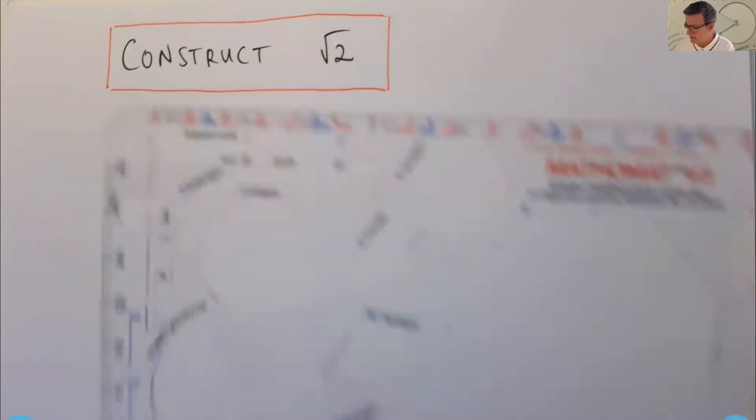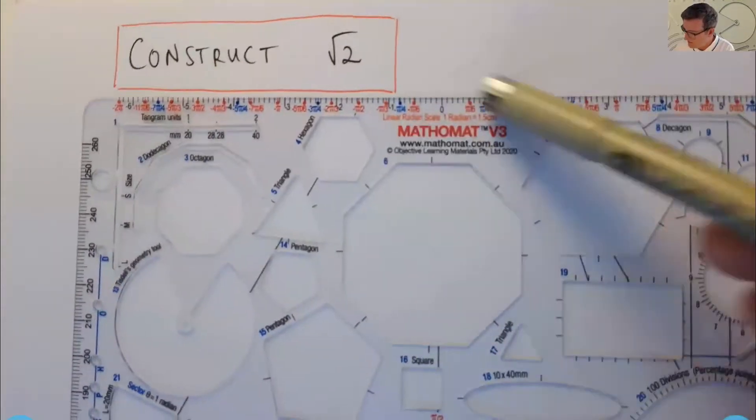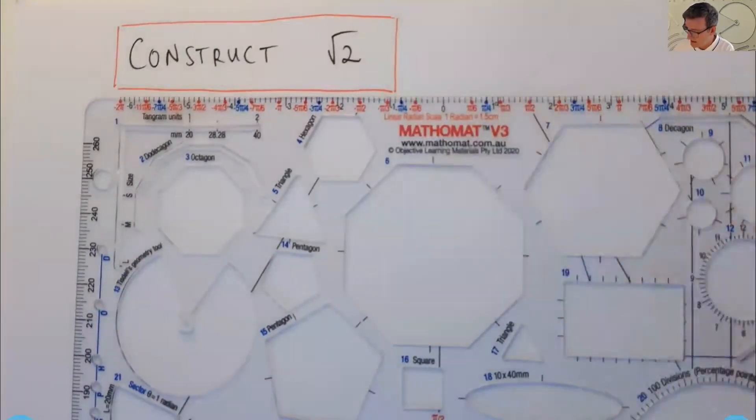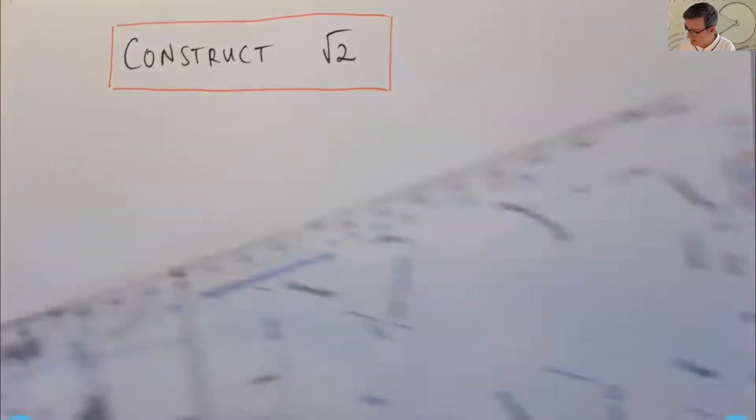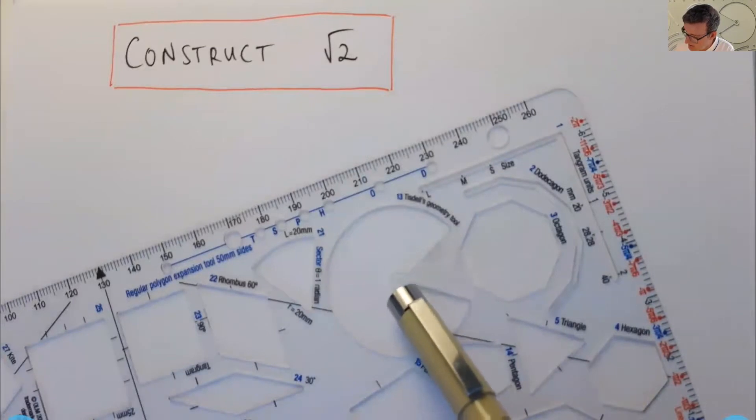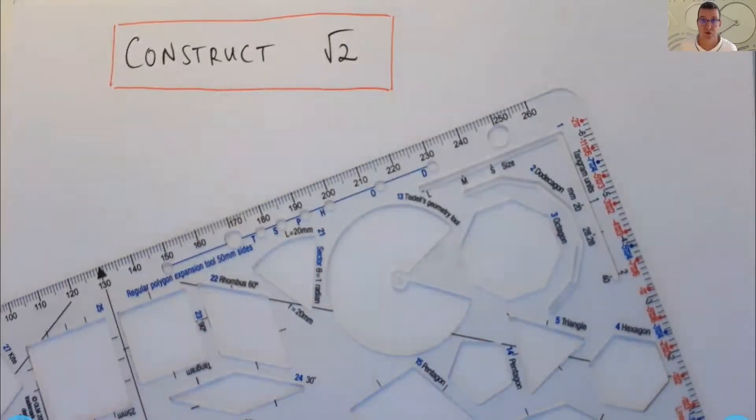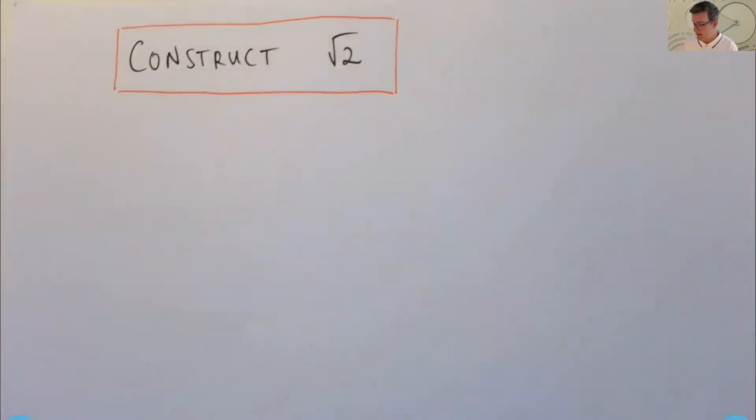Now, the circle arc template that I'm going to use is part of this bigger tool called a Mathemat. And this is the particularly important circle arc template. You can position the center point at a given point and you've got a straight edge. So they're the two tools we're going to use. You don't need all of these markings, but they can be useful and interesting in other ways.